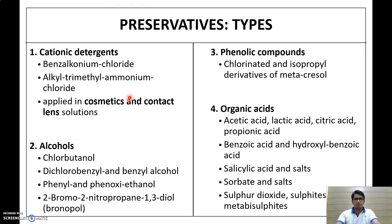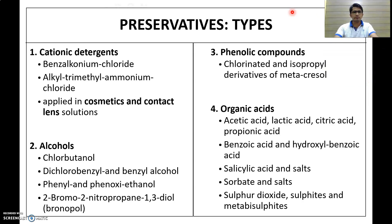There are different types of preservatives used in pharmaceutical products. They are mainly classified into cationic detergents, alcohols, phenolic compounds, and organic acids. Examples of cationic detergents are benzalkonium chloride and alkyltrimethylammonium chloride. These are mainly used in cosmetics and solutions used for contact lenses.